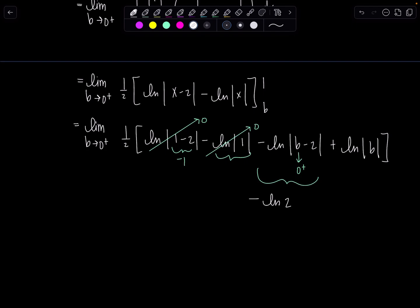b is approaching again zero from the right. So think of the graph of ln of x. Do you have it burned in your brain? You should. If you're a calculus student, you must. Oh my goodness. So ln of x is going to go through one zero. Vertical asymptote, y-axis looks something like this.